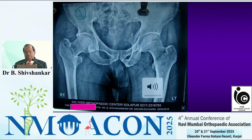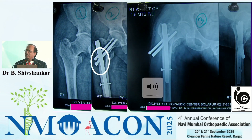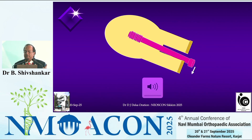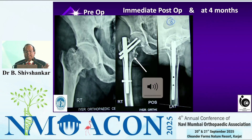In my own case where I put a substandard screw — the screw length was not proper and the fracture was not compressed — it walked out in the immediate postoperative period. The screw head requires the support of the lateral wall. If the lateral wall support is not there it can toggle and walk out. The head of the screw requires support — either the lateral wall of the bone, a trochanter buttress plate, or my technique: the nail itself acting as the lateral wall.